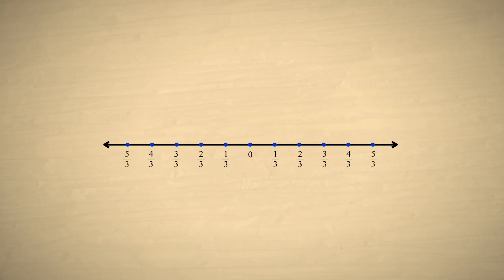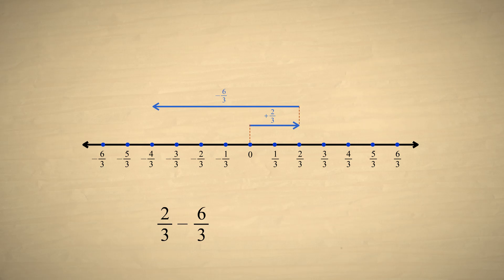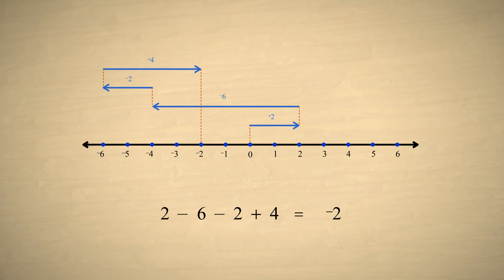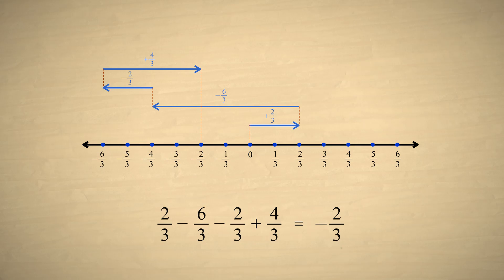For example, on the number line, adding the fractions two-thirds minus six-thirds minus two-thirds plus four-thirds looks a lot like adding the integers two, minus six, minus two, plus four. Except that each division represents one-third unit instead of one whole unit. This is why we simply add the numerators of each fraction, since the numerators specify the number of divisions in each fraction.